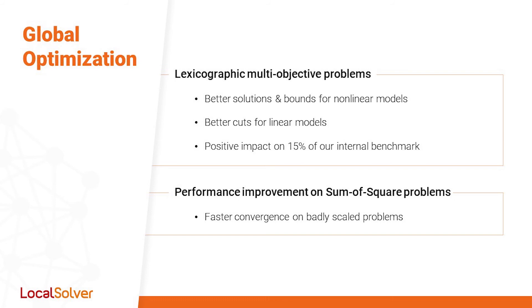Let's now take a look at the global optimization capabilities of Local Solver. As I mentioned earlier, Local Solver is now able to compute lower bounds on more and more types of problems. In this new version, we have worked on finding better solutions and better bounds for multi-objective nonlinear problems and have reinforced the cuts used for integer linear models. These developments account for improvements on 15% of our internal benchmark. We have also worked on performance improvements on numerically challenging instances of sum of squares problems typically encountered in machine learning.